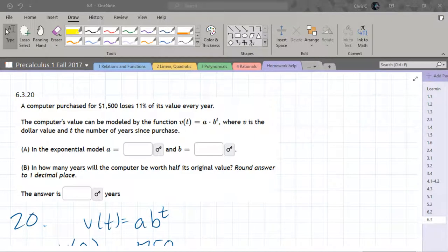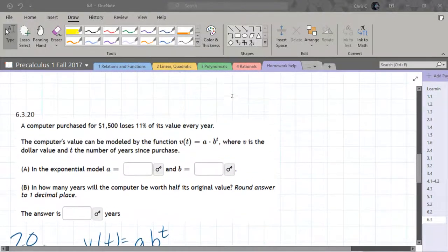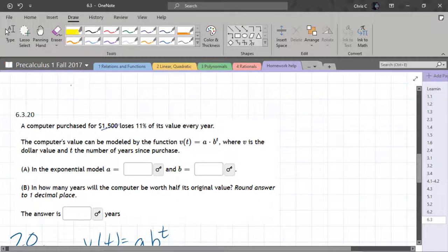We're going to do 6.3.20. Now I already worked this problem out and I couldn't get the exact same values I started with. So in my original problem I worked out, this was $1,750. So a computer is purchased for $1,750. It loses 11% of its value every year. And they already tell us what the function could look like right here. And what we're going to do is figure out A and B and then answer this.